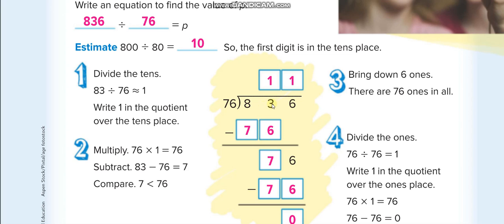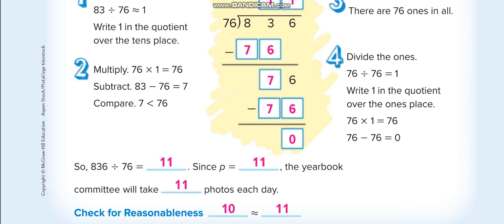6 minus 3 is not possible, so we borrow: 13 minus 6 equals 7. Then we bring the last digit 6 down, and 76 times 1 is 76 again. So 76 minus 76 equals zero. The quotient is 11.